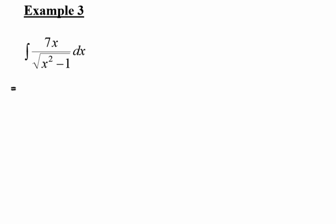So this is the integral of 7x multiplied by x squared minus 1 to the power of negative 1 half dx. So I took this to the top. Instead of writing root, I wrote the power of negative 1 half.